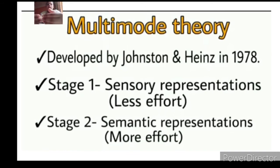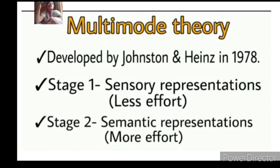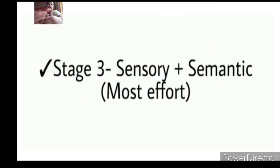In stage two, these senses which bring information from the outside world need to be understood and analyzed. That is known as semantic representation, which needs a lot of effort to understand and decode the information coming from the external world. The third stage combines sensory plus semantic. When these two join together, they give the synergy of information and we analyze and interpret it.